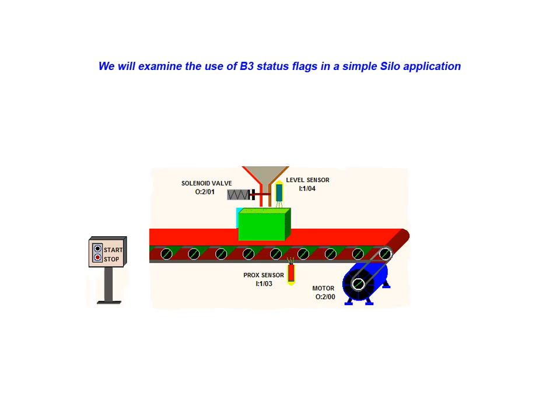This animation is intended to illustrate the use of the B3 bit file in tracking or monitoring program status during execution. We will examine the use of bit file status flags in a simple silo or hopper application.